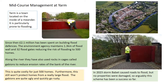In the middle course, an example of management can be found at Yarm. Yarm is the town located in the middle of the meander and so it's particularly prone to flooding — it suffered serious floods in 1995. Since then, £2.1 million was spent on flood defences, including 32 floodgates to try to reduce the risk of flooding to 500 homes.